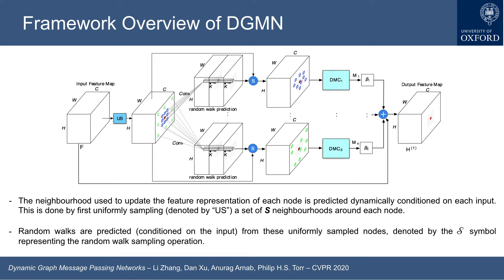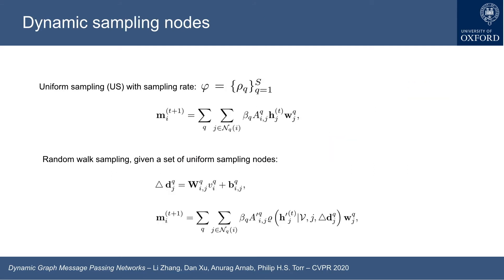This is the framework overview of our model. A neighborhood used to update the feature representation of each node is predicted dynamically conditioned on each input. This is done by first uniformly sampling a set of neighborhoods around each node. Random walks are predicted conditioned on the input from these uniformly sampled nodes. A fully connected graph typically contains many connections and parameters, which naturally brings redundancy in connections. To maintain a large receptive field while utilizing much fewer parameters, we further explore dynamic sampling strategies in the proposed graph message parsing network. A uniform sampling scheme and a predicted random walk sampling scheme are developed to effectively reduce redundancy in a fully connected graph.